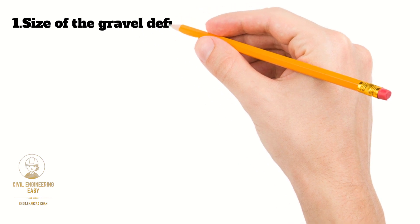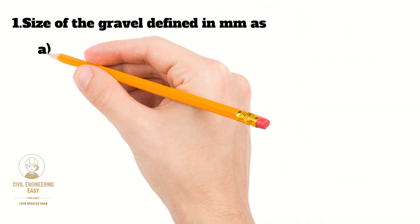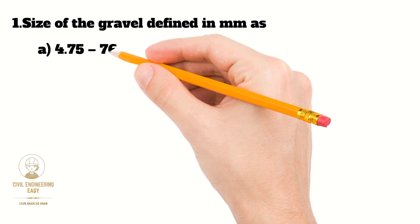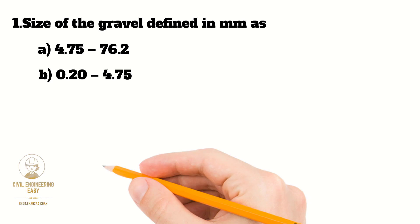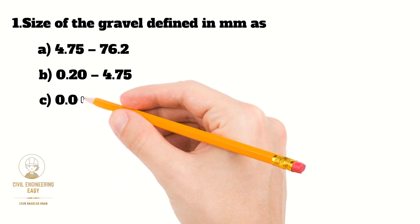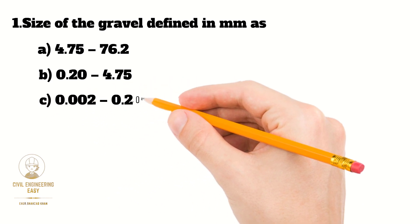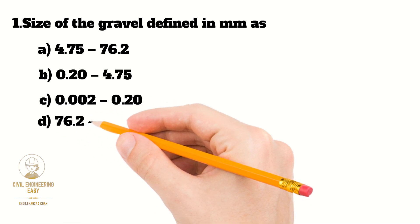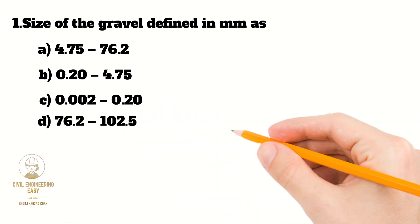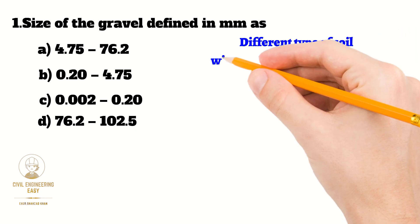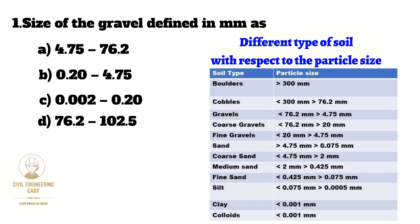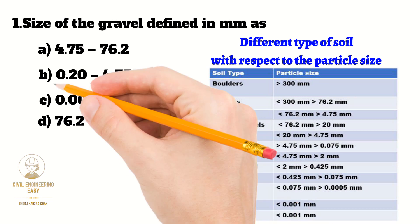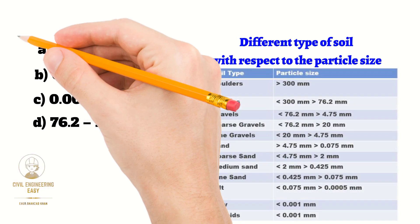In question number one, the size of gravel is defined in mm as: Option A is 4.75 mm to 76.2 mm, Option B is 0.2 mm to 4.75 mm, Option C is 0.002 mm to 0.2 mm, Option D is 76.2 mm to 102.5 mm. According to soil classification by particle size, gravel lies between 4.75 mm to 76.2 mm. Option A is the correct answer.